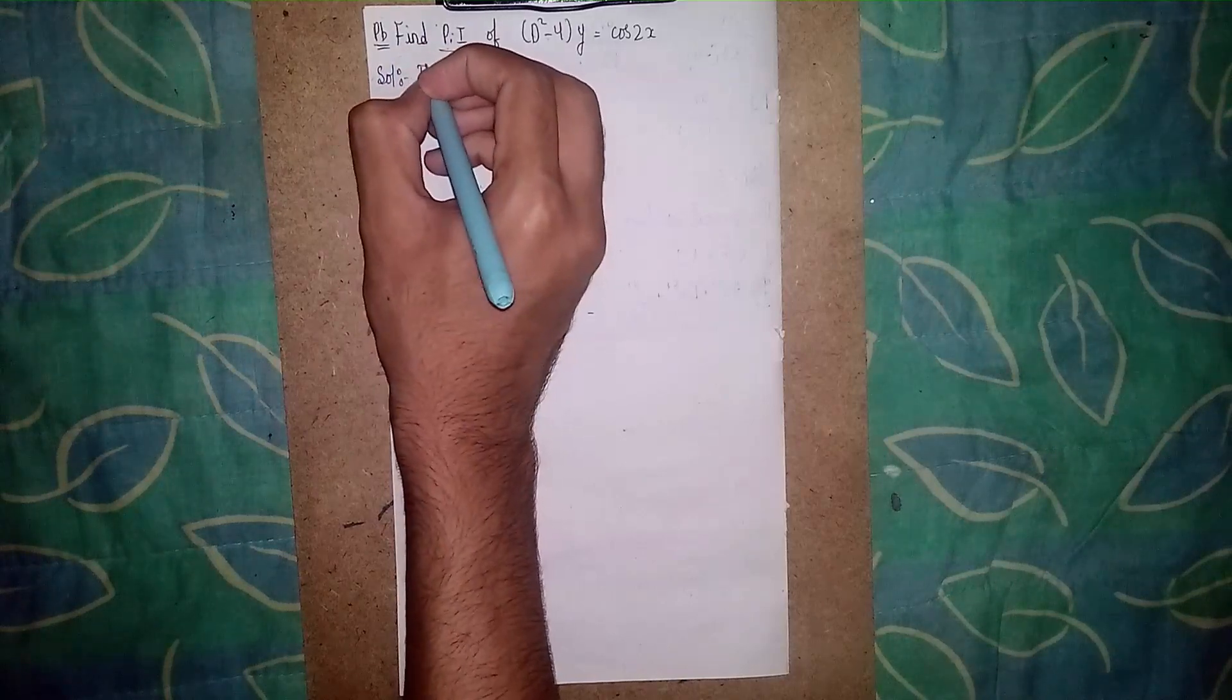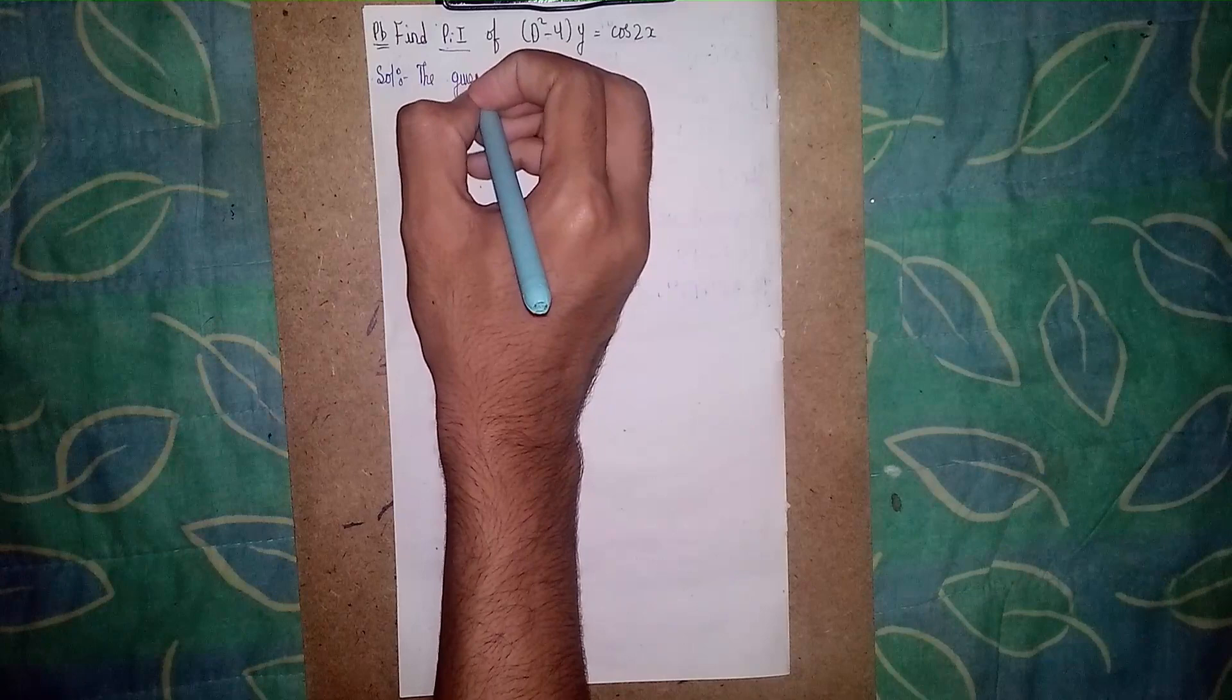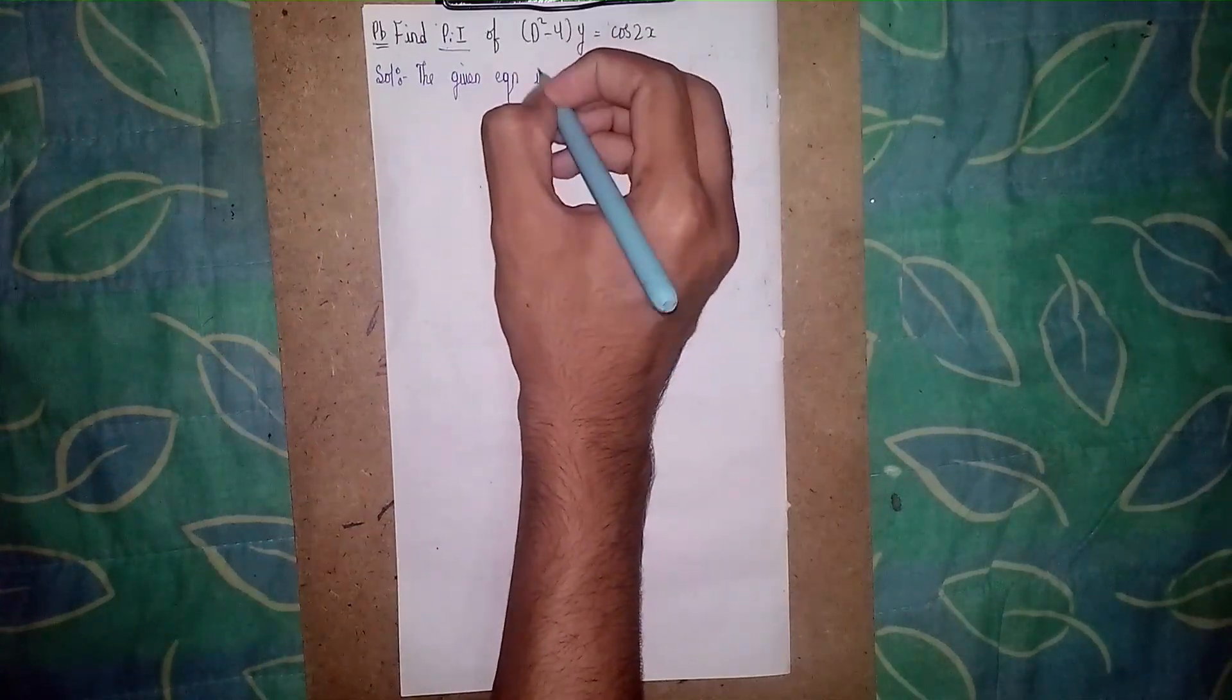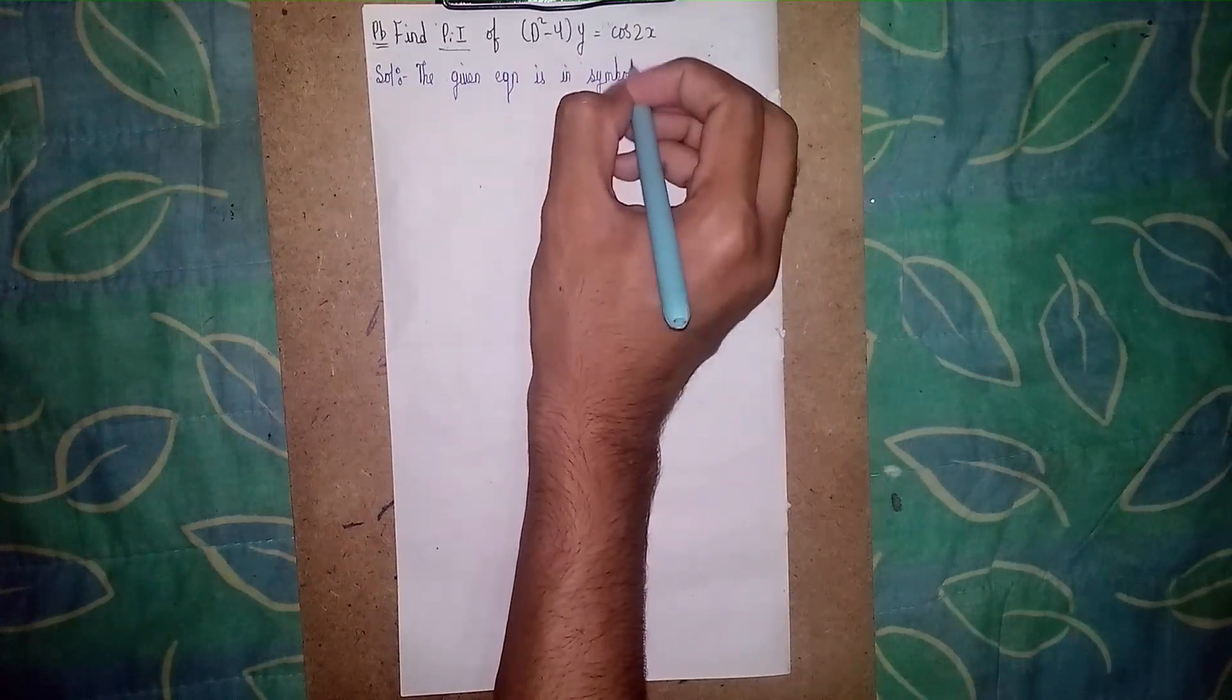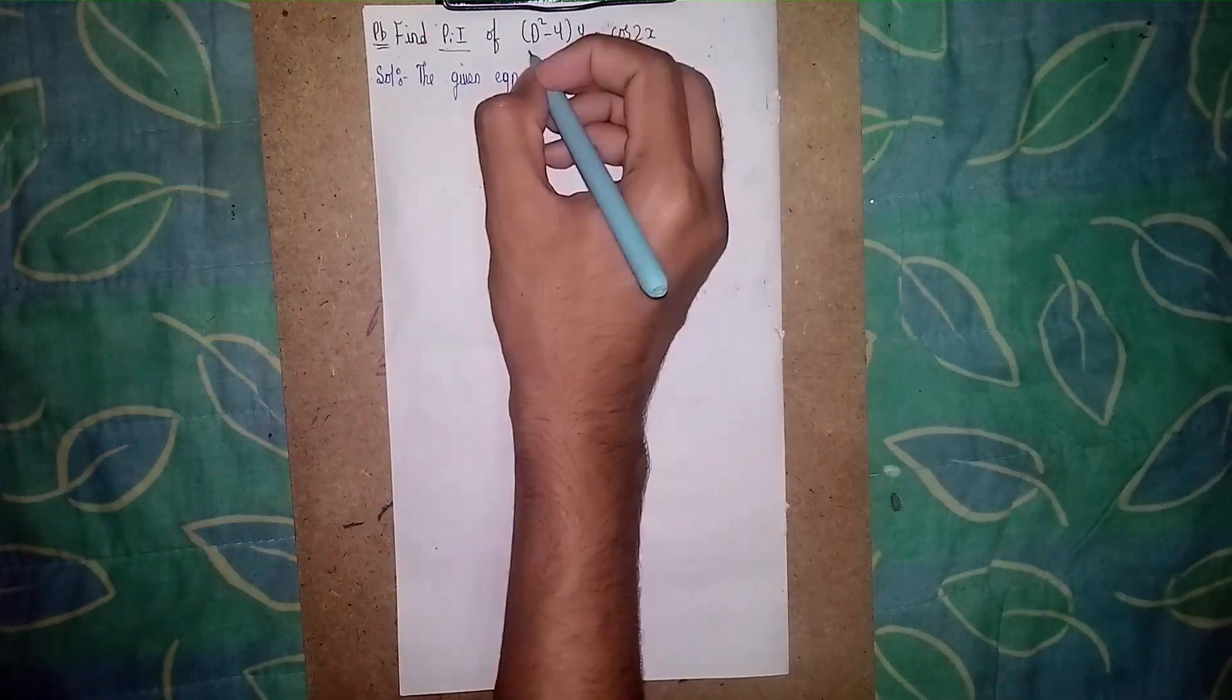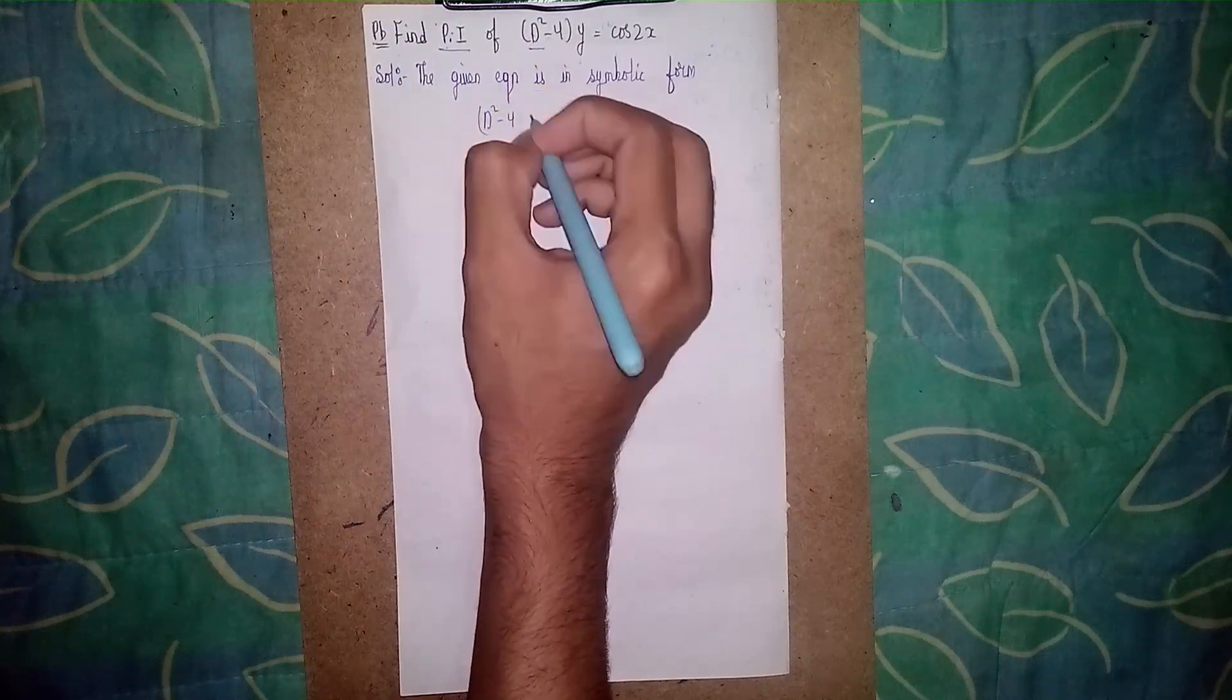The given equation... the question is in symbolic form. Okay, this question is given in symbolic form. It means here D is symbolic. So write the question first here: D² - 4 into y is equal to cos 2x.